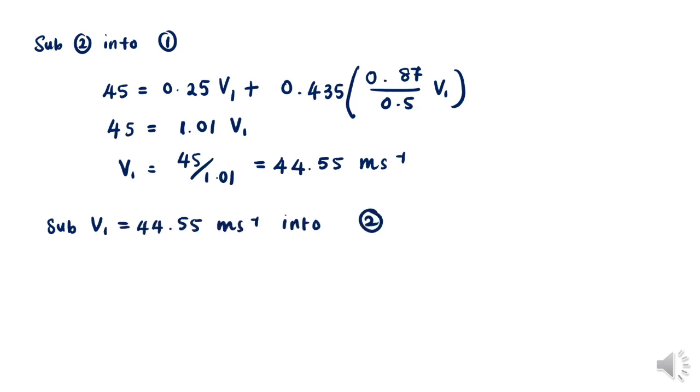Substitute this value of V1 into our second equation. We get V2 to be 0.87 divided by 0.5 times 44.55, which gives us 77.52 meters per second.